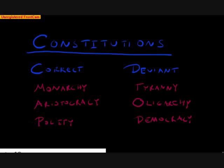Correct constitutions were those in which the rulers ruled for the public benefit. Deviant constitutions were those in which the rulers ruled for their own private benefit.